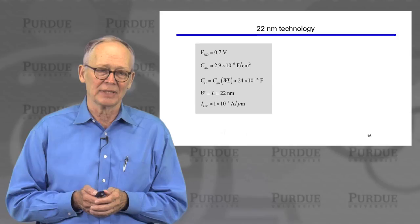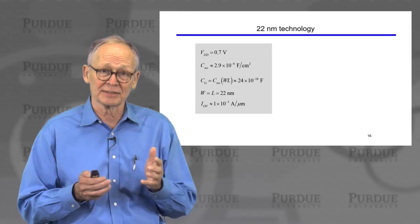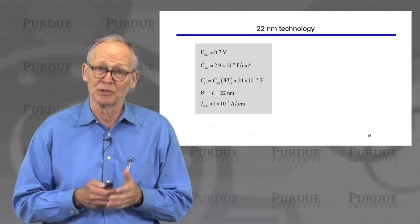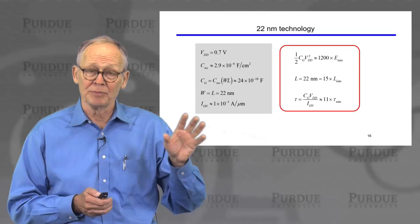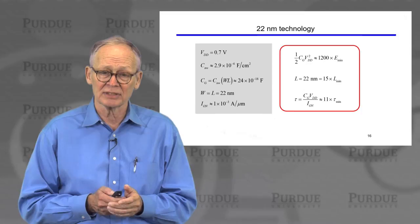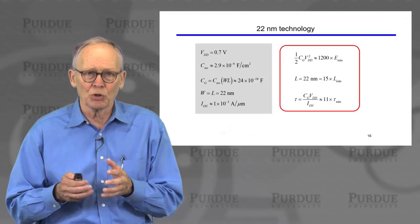I'll use 22 nanometer technology as an example. Here are approximate numbers for 22 nm technology: the power supply voltage, the inversion capacitance, gate capacitance, with width and length at 22 nanometers, and an on current of 1 milliamp per micrometer, which is typical of modern devices. The minimum switching energy for the MOSFET is one-half times gate capacitance times drain voltage squared. Plugging in numbers, that's 1,200 times the thermodynamically minimum switching energy — a few orders of magnitude above the fundamental limit.